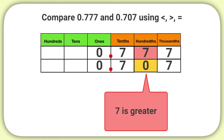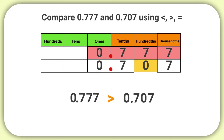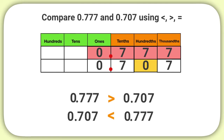7 is greater than 0, so 777 thousandths is greater than 707 thousandths. You can show this by writing that 777 thousandths is greater than 707 thousandths, or 707 thousandths is less than 777 thousandths.